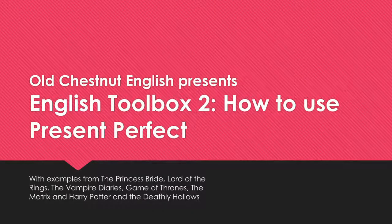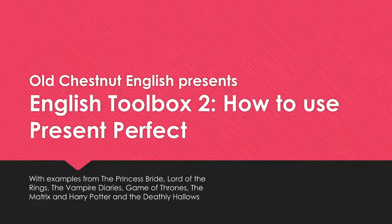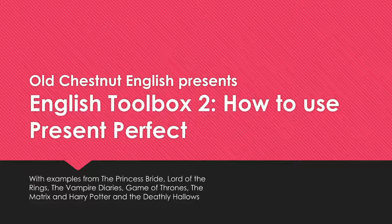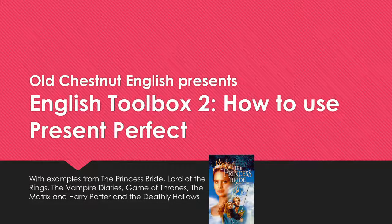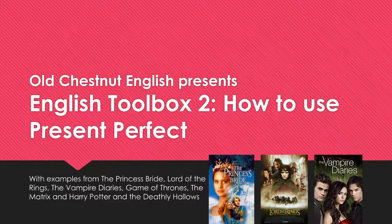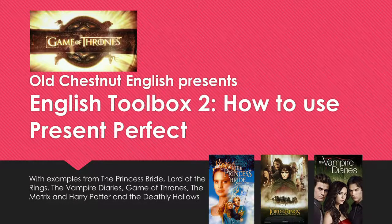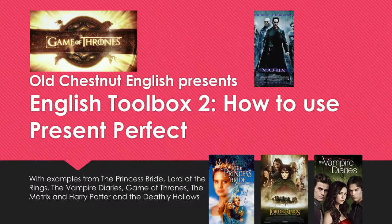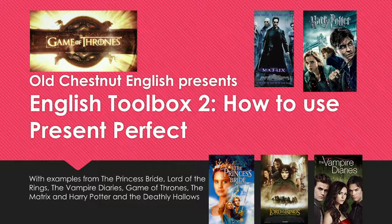We use the present perfect to talk about actions that began in the past but are not finished, repeated actions, and actions where the time something occurred is not the most important thing. We'll use examples from The Princess Bride, Lord of the Rings, The Vampire Diaries, Game of Thrones, The Matrix, and Harry Potter and the Deathly Hallows.